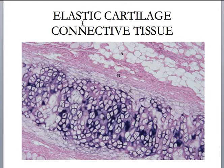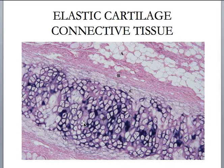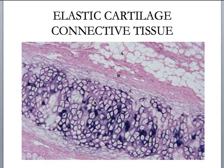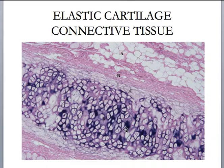This is elastic cartilage connective tissue. You might immediately think it looks like hyaline cartilage — well, it does. It's very similar, but also very different. If you look at the ground substance that surrounds all of those chondrocytes in their lacunae, you'll see all this dark staining stuff. So it's not nearly as glassy in appearance. It still has a little perichondrium and it still looks like little Smacks cereal, but the extracellular matrix ground substance has all this dark stuff in it and it's not nearly as glassy.